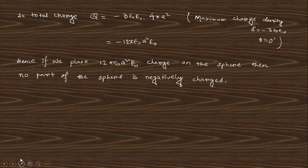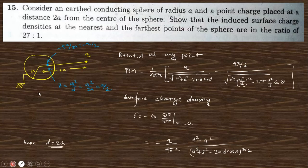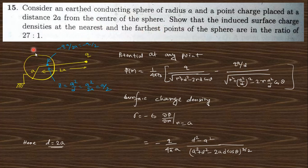Next, question 15: Consider a grounded conducting sphere of radius a with a point charge placed at a distance 2a from the center. Find the ratio of the induced surface charge density at the nearest point to that at the farthest point. From the previous lecture, the potential for this configuration is known, with the image charge being -qa/d where d = 2a.